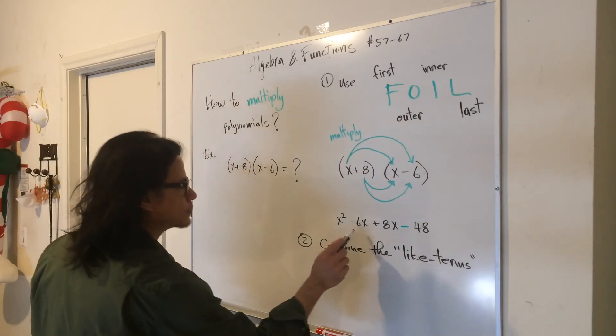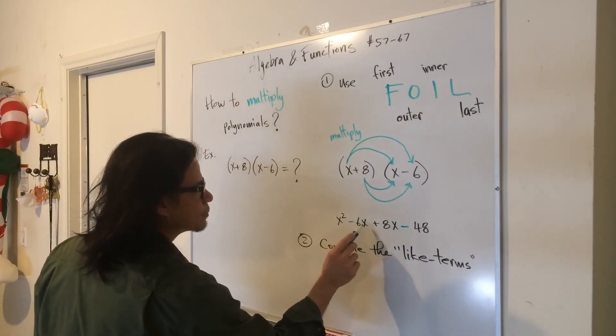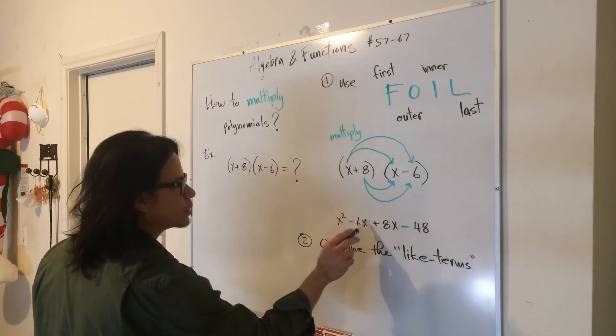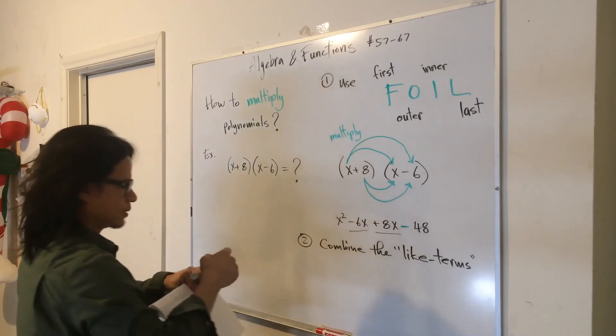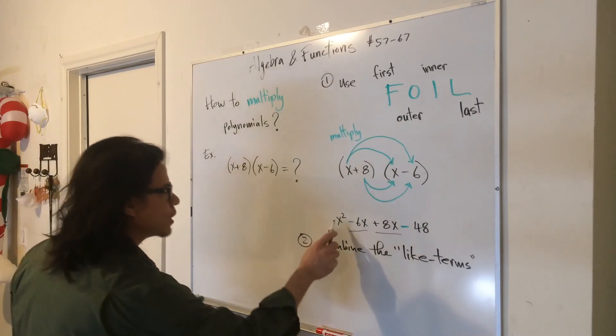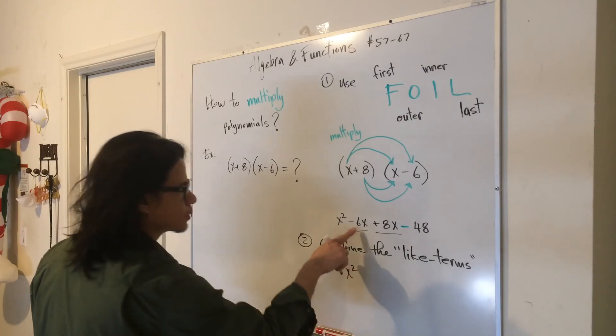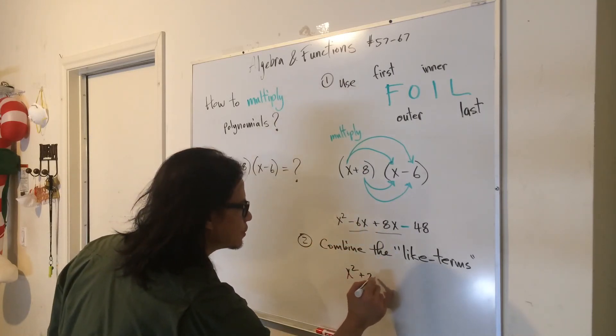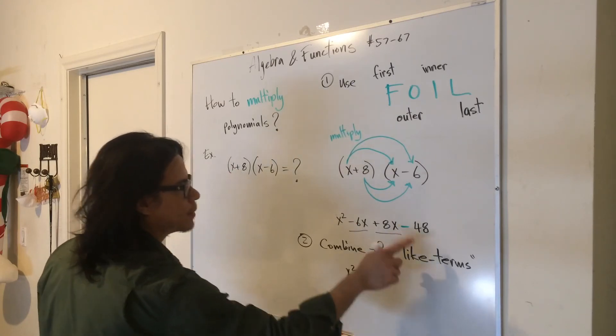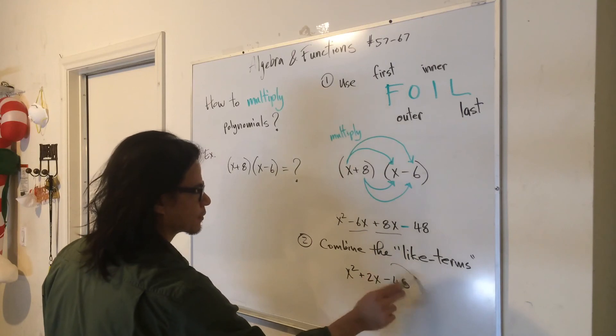So underline them—there's nothing to combine with the x squared. So let's move on to the x to the first power. You have negative 6x plus 8x. In our final answer, we're going to have x squared. Negative 6 plus 8 is positive 2x minus 48. There it is.